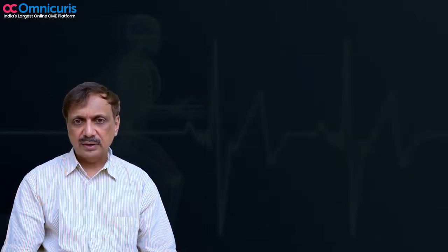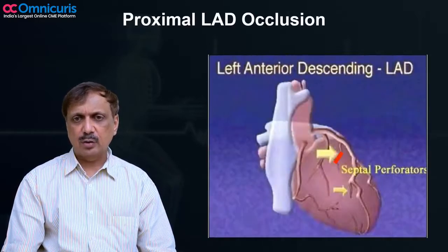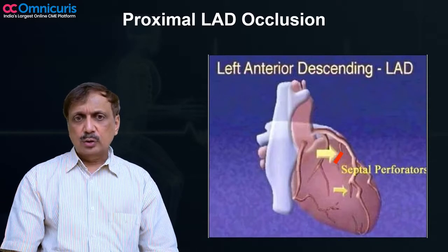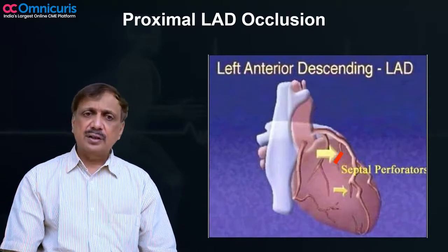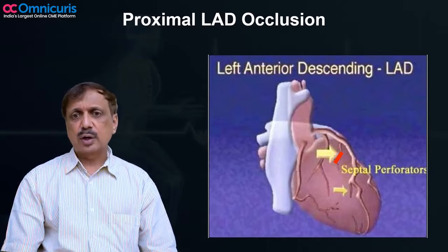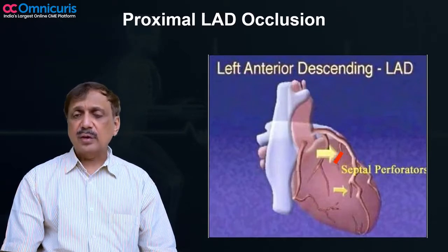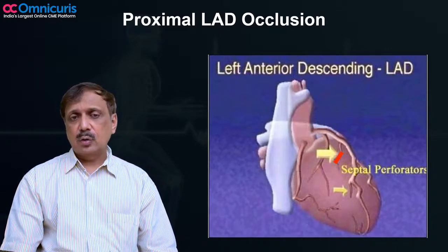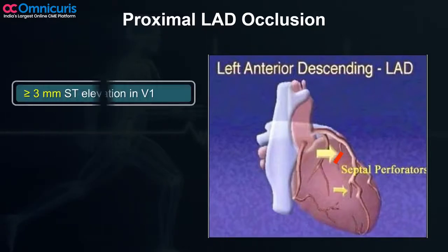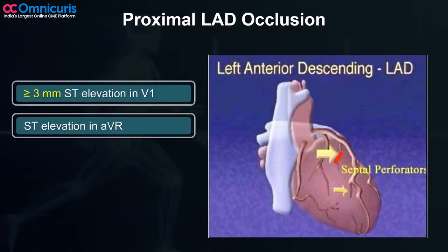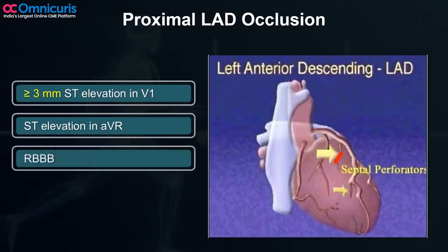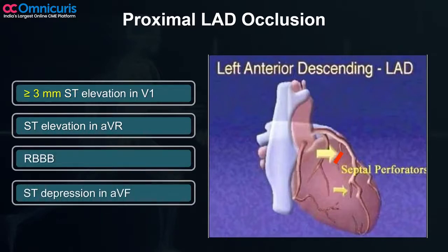What do I mean by this? If we look at left anterior descending artery occlusion, proximal LAD occlusion will show you marked ST elevation in lead V1 and also ST elevation in AVR, but V1 will exceed AVR. So if you see any of these signs — marked ST elevation in V1, ST elevation in AVR, right bundle branch block, or ST depression in one of the inferior leads, for example AVF — any of these signs is quite specific in anterior wall MI to localize the occlusion to be the proximal LAD.